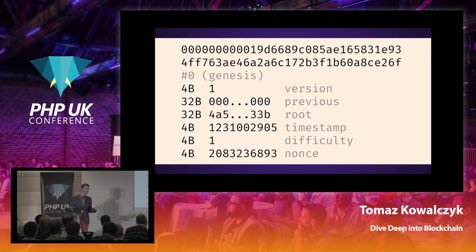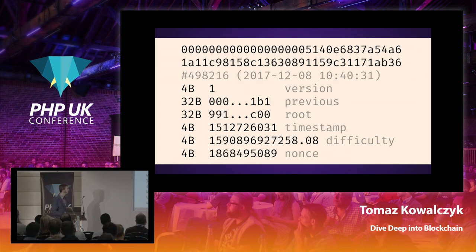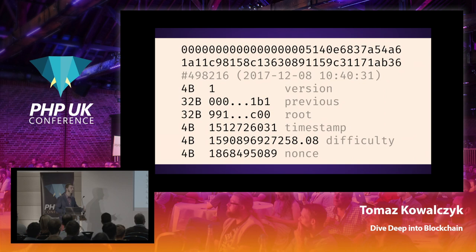Here is an example of the first block of the Bitcoin blockchain. You can see the hash of that first block, version 1, all zeros for the previous block hash because it's the first block, the root hash of the data, a timestamp, difficulty of 1, and a nonce as a random value. Block 500,000, generated two years ago, shows a non-zero previous hash, a different root hash, a current timestamp, a difficulty that went through the roof, and a nonce value.